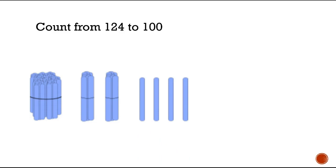Now our next challenge is counting from 124 back to 100. We can do that by counting backwards and taking away our straws. So we have 124 here. Let's start taking away: 124, 123, 122, 121, 120, 110, 100. We made it. Good job.